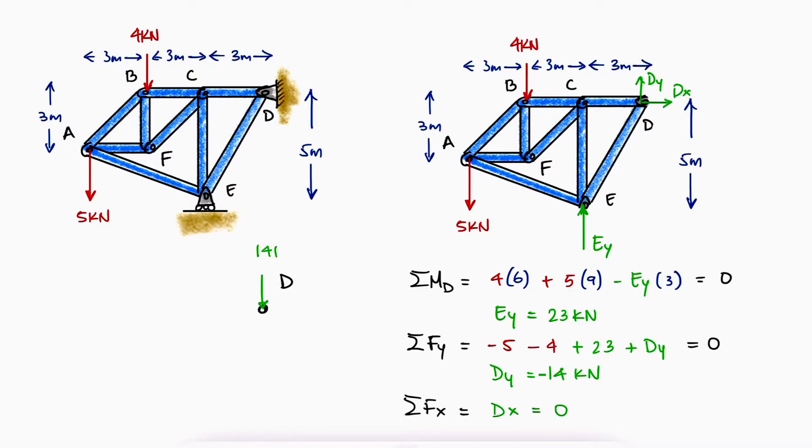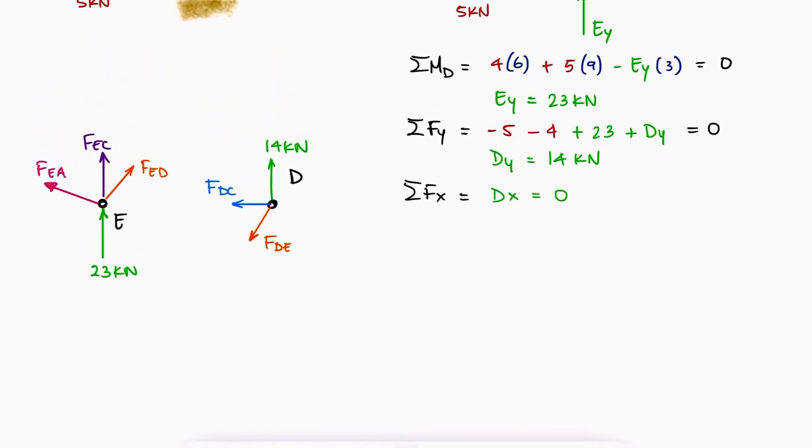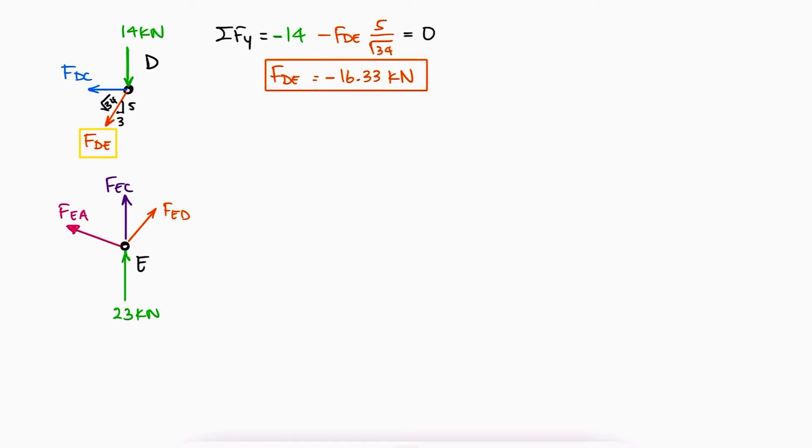Knowing the reaction forces at D and E, we have two options for using the method of joints. Since for every joint we have two equations in a 2D problem, sum of forces in X and Y, we'll begin with joint D that only has two unknown variables. The sum of forces in Y allows us to solve for FDE and the sum of forces in X for FDC.